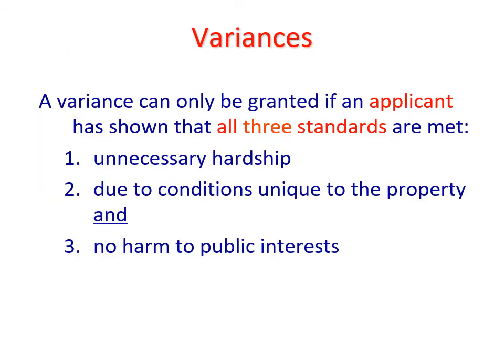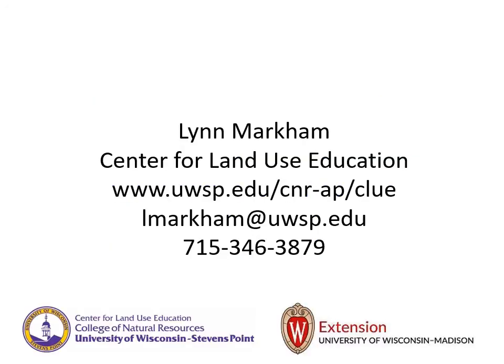So a quick review of what we covered in this video: a variance can only be granted by a zoning board if an applicant has shown that all three standards are met — unnecessary hardship, due to conditions unique to the property, and no harm to the public interests. Thank you for joining us. Please contact me if you have any questions about variances.